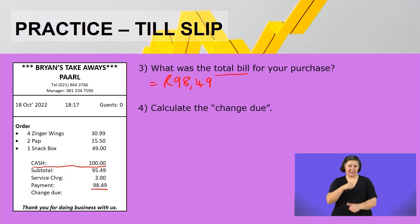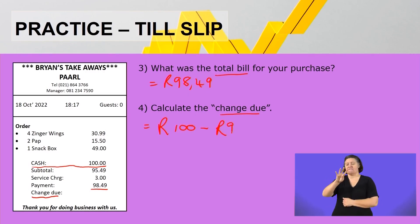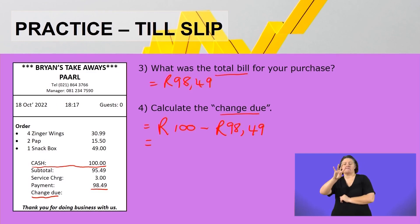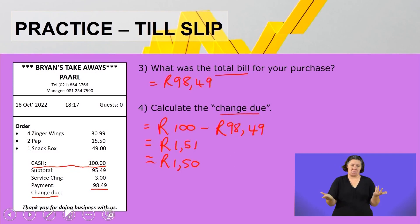Question number four: calculate the change due. We can see how much you must now get back. So 100 rand — what you tendered — minus what you owed them, the 98 rand and 49 cents. You gave them 100 rand minus 98 rand 49 cents, so you should get back one rand and 51 cents. But remember, one cent and two cent and five cent coins are no longer in circulation, so you will have to get back one rand and 50 cents.